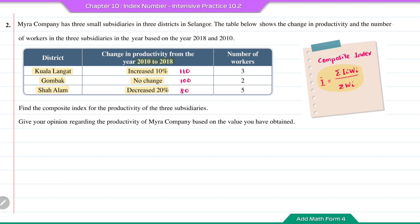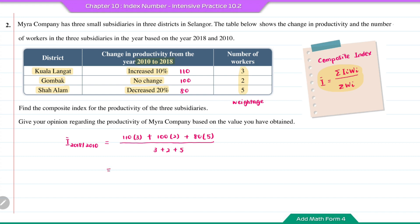Here the numbers of workers will be the weightage. So to find the composite index in the year 2018 based on 2010, it will be 110 times 3 plus 100 times 2 plus 80 times 5, divided by the total weightage 3 plus 2 plus 5. The answer is 930 divided by 10, which is equal to 93.